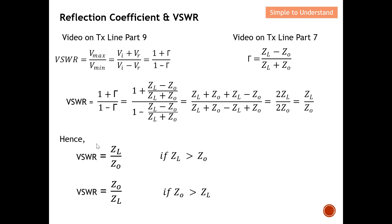There are two extreme cases. Since the Refraction Coefficient cannot be less than 0, ZL must always be bigger than Z0 for the equation VSWR = ZL/Z0 to hold. When ZL is greater than Z0, this equation is valid. However, if Z0 is greater than ZL, then the equation becomes VSWR = Z0 over ZL. The situation depends on the impedance of the load relative to the characteristic impedance of the transmission line.